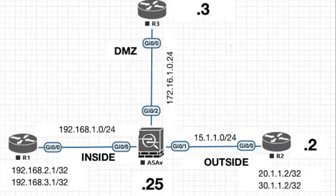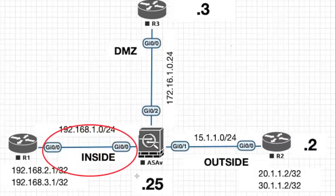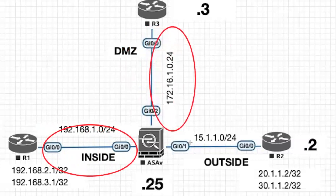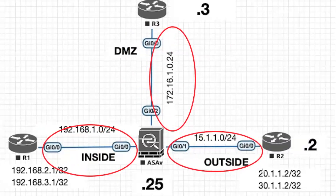In OSPF, this network topology will be split into multiple areas. This OSPF area is a logical grouping of router interfaces. These two interfaces we can say as one OSPF area, and these interfaces we can say as another area, and these two interfaces we can consider as one OSPF area.